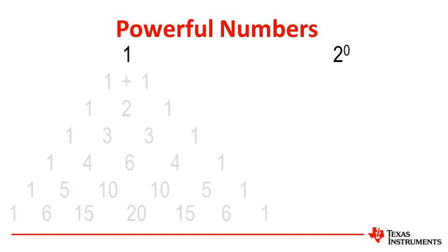Hidden in the rows of Pascal's triangle are the powers of 2. The 0th row is 2 to the 0. The sum of the terms in the first row is 2 to the 1. The sum of the terms in the second row is 2 to the 2, and so on.